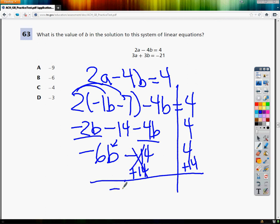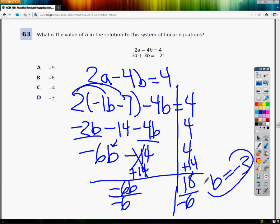These cancel out. I bring down negative 6B and 14 plus 4 is 18. I'm almost done to find out what the value of B is. I've got 6 times B or negative 6 times B. So in order to get rid of negative times negative 6, I need to divide. And 18 divided by negative 6 is negative 3. So B is equal to negative 3. That's substitution. That's one way that you can do the problem.